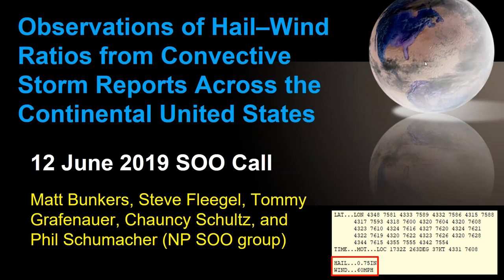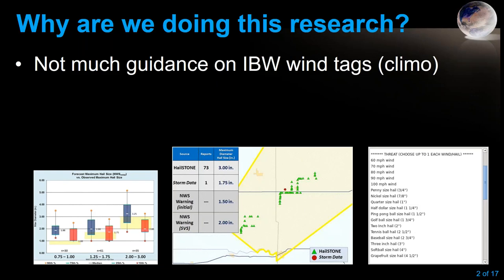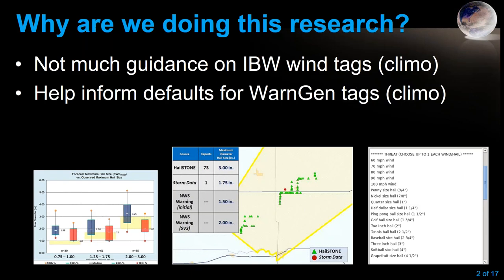So how long have we been including these hail and wind tags in warnings? It's been about nine or ten years — we started around 2010. And what do you have set as your defaults in WarnGen for hail and wind? That's the question Tommy in Grand Forks asked about a year ago, and that got us going on this research. There is not much guidance on the wind tags for our severe convective warnings. Scott Blair has done some good work with hail, but we were missing that for wind, so we're looking at this from a climatological perspective.